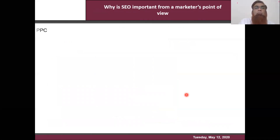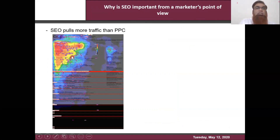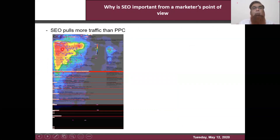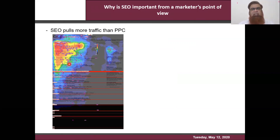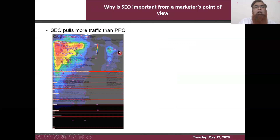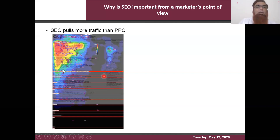Why is SEO so important for marketers? If you see this section which we call the 'reverse L' — the extreme top left is the place on any book, website, or mobile where you get more attention. This image is based on how our mind reacts once we see something. Since a lot of attention will be only in the top left corner or in the first half of the page, most companies are trying to get their website to start ranking in this part of the search engine result page.